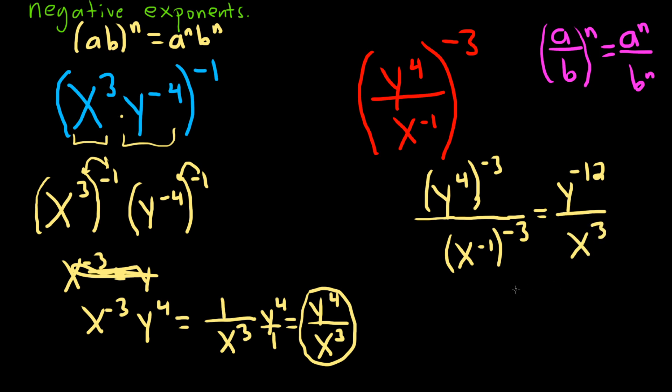We're almost there. We just can't leave negative exponents. So what we can do is we can bring the y downstairs and it will make the exponent positive. So this will be 1 over y to the 12, x to the 3. And that would be the final answer. I hope this video has been helpful.